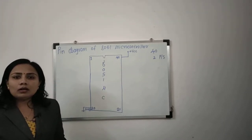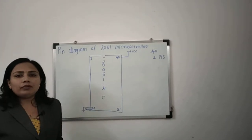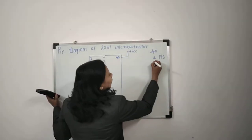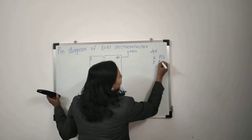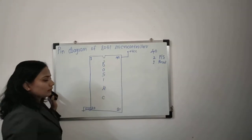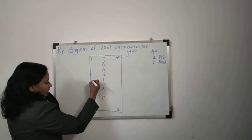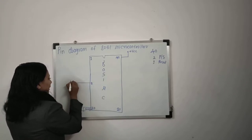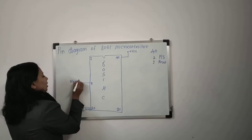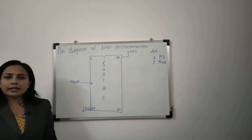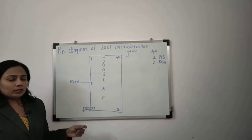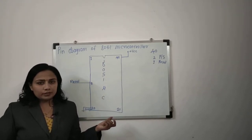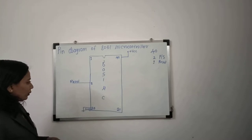Now, this IC will require a reset pin. We have 1 pin as your reset pin — pin number 9 is your reset pin. We will see the functionality of each and every pin afterwards. The objective here is to get the idea about the structure of this 8051 microcontroller.